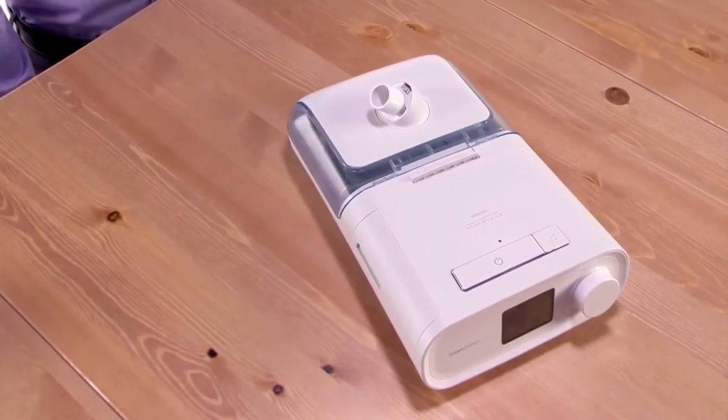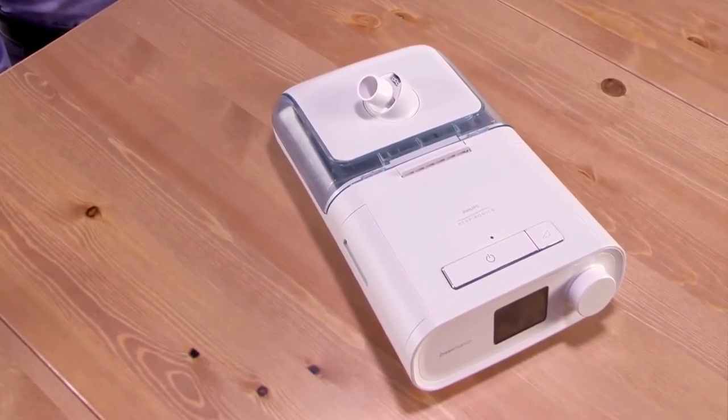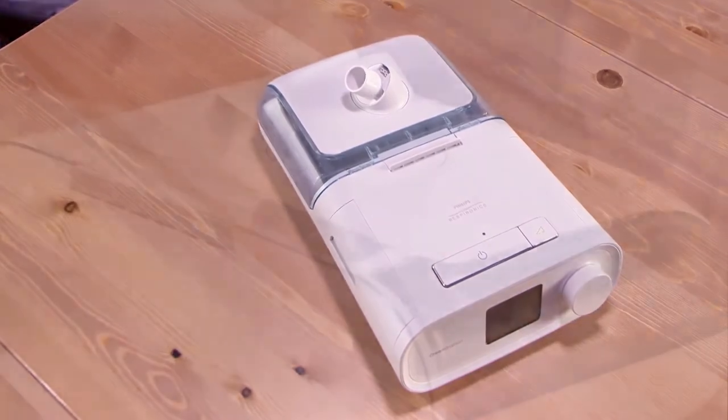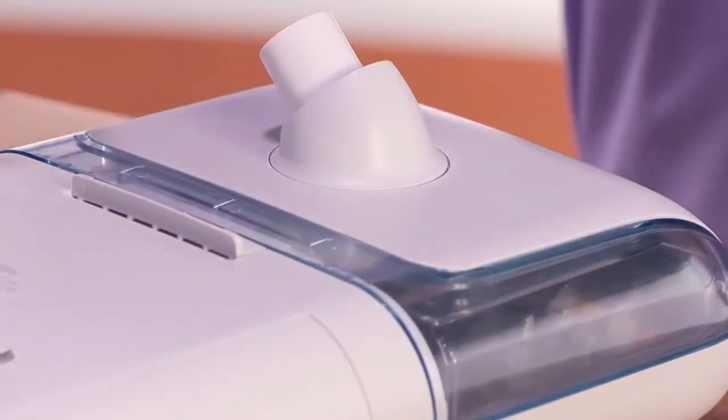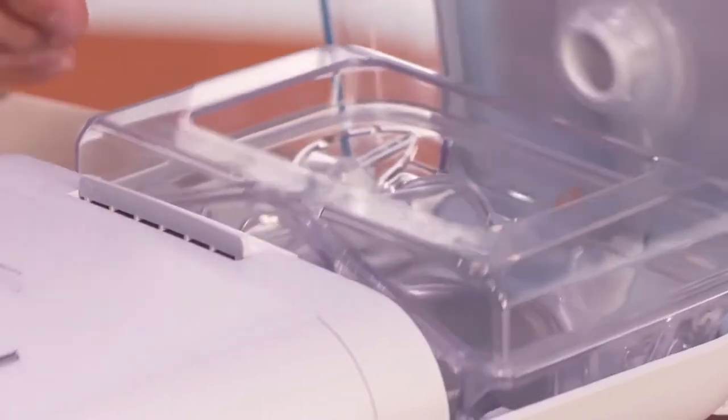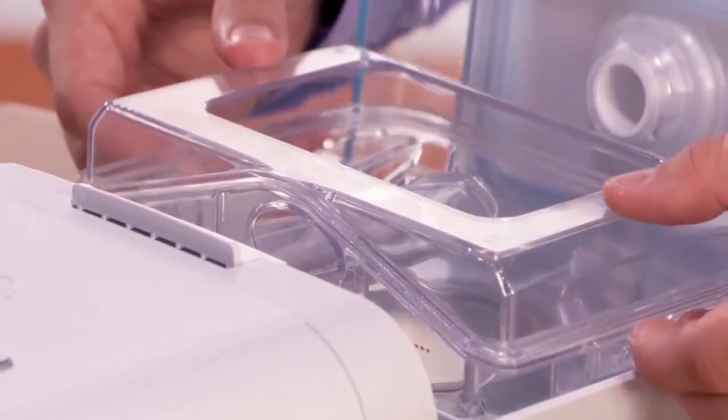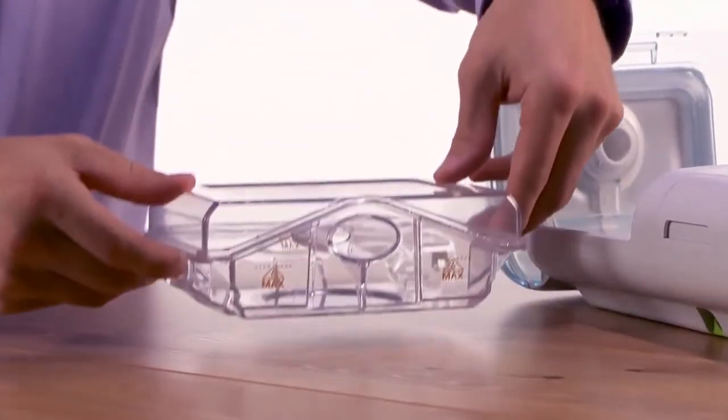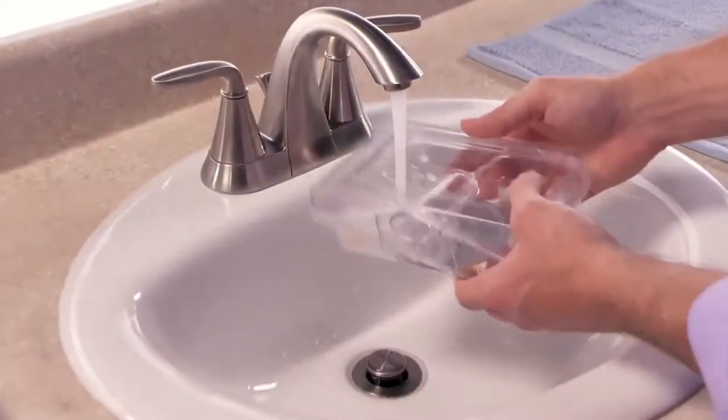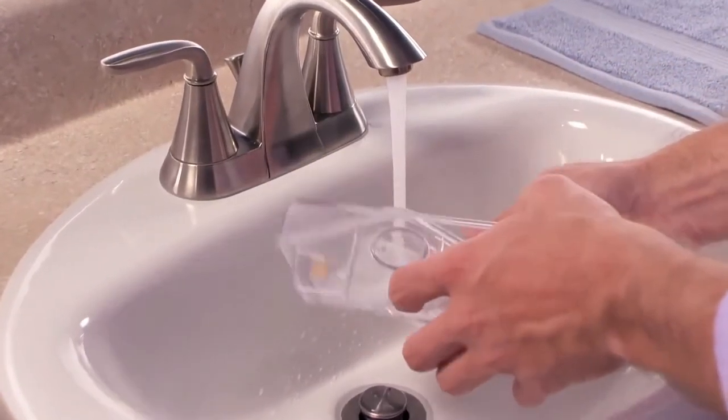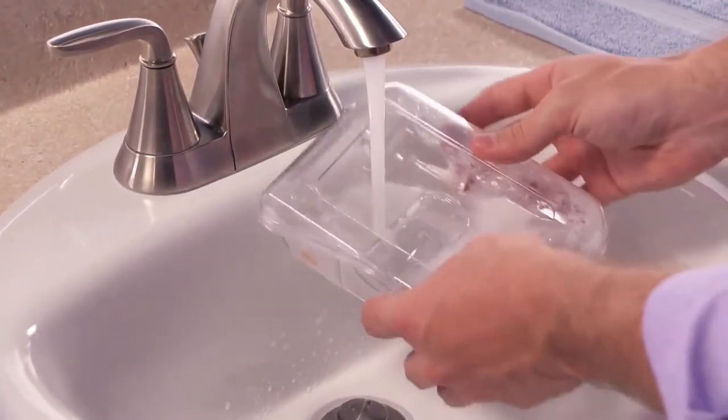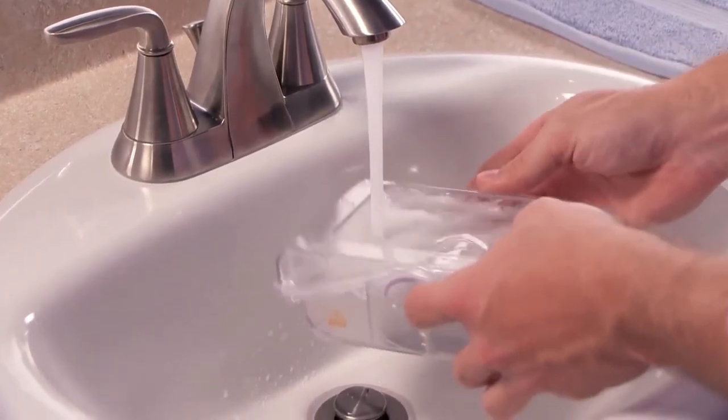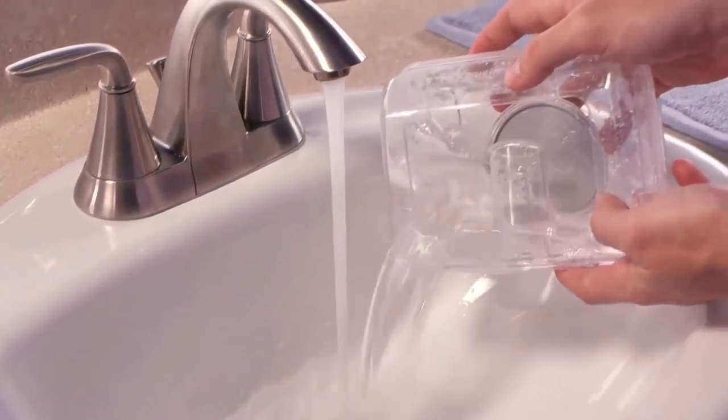You should fill your humidifier water tank with distilled water each night before you go to bed. Slide the humidifier release latch toward the therapy device while simultaneously lifting the lid up, swinging it completely open. Remove the water tank. Clean the water tank before first use by rinsing with tap water. Each subsequent night of use, empty any remaining water and rinse the tank as needed before filling.